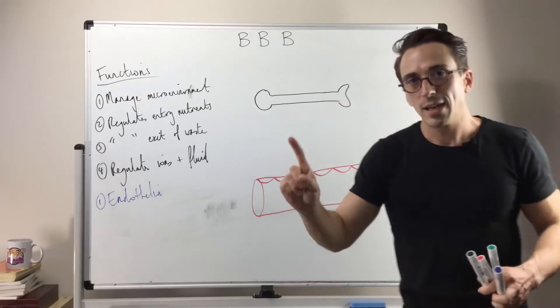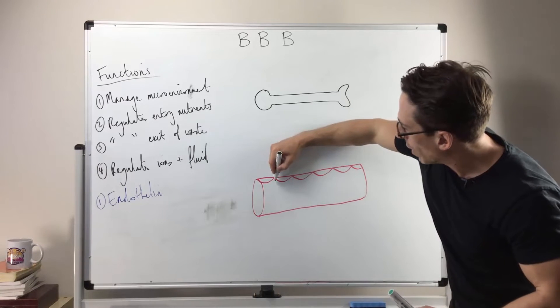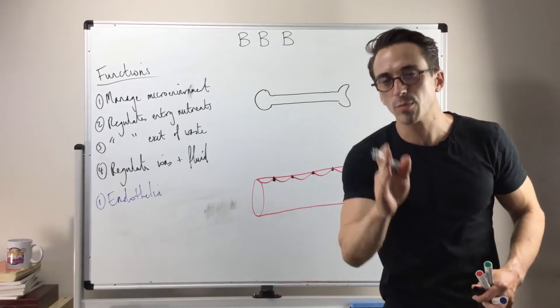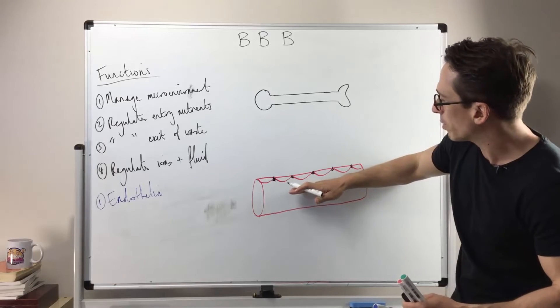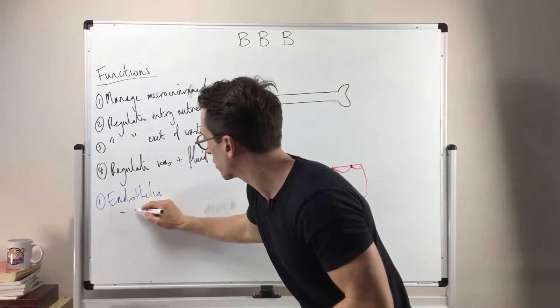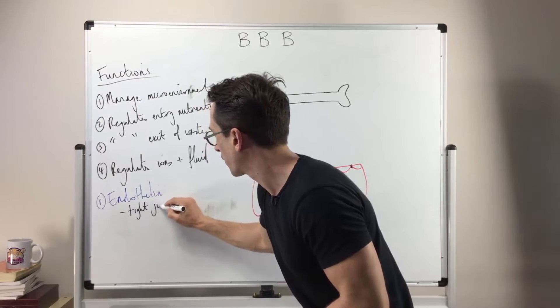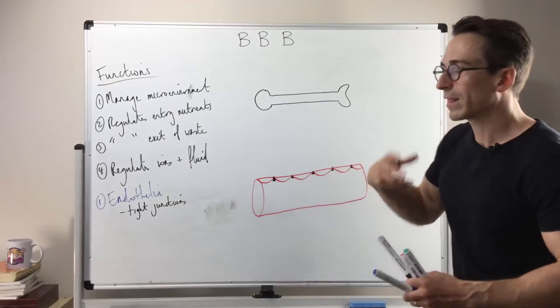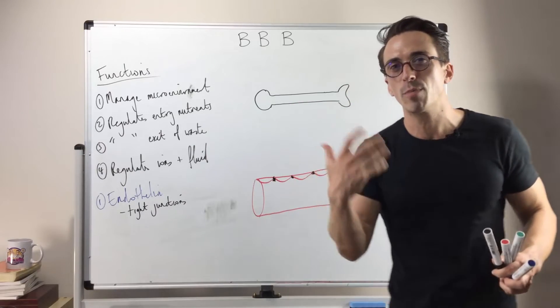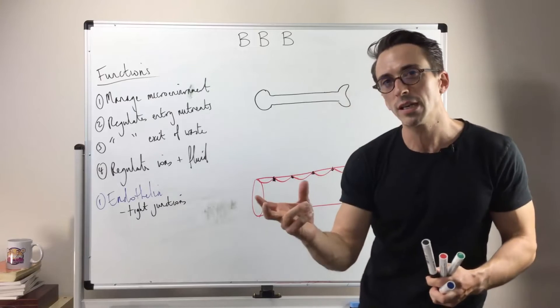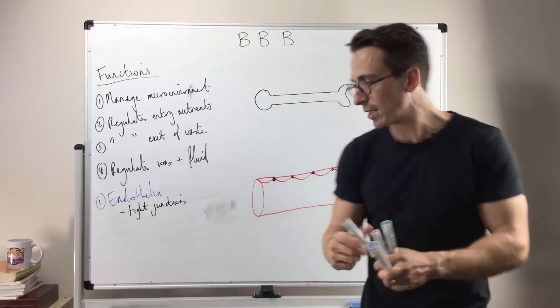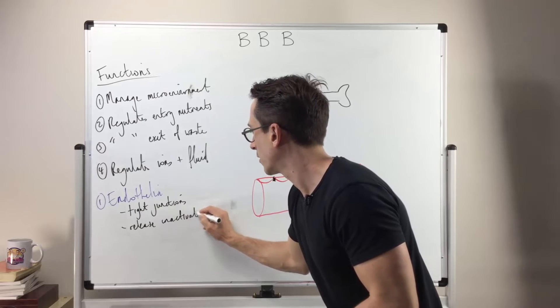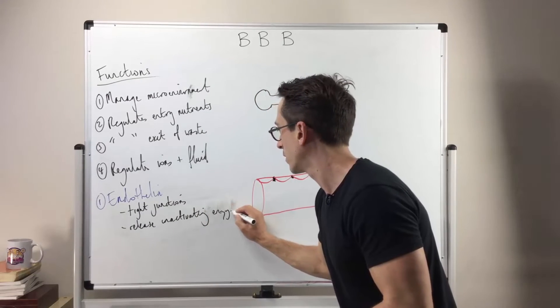But the blood-brain barrier has these welded structures between each endothelial cell and these are called tight junctions. So it's the tight junctions that play the most important role here in limiting what's in the bloodstream to what's getting out of the bloodstream going to the tissue. Another important role of endothelia is that the endothelial cells themselves can release certain substances like peptidases or enzymes like cytochrome P450 that can inactivate proteins or potentially neurotoxic or neuro-damaging substances. So the endothelia can release inactivating enzymes, another protective mechanism.